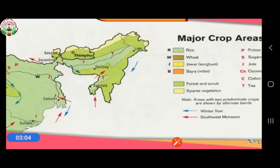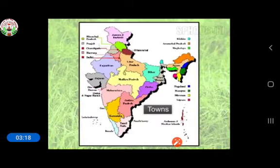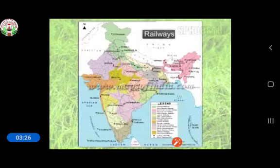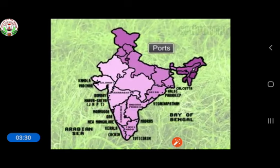Special symbols are also used to show distributions of crops, minerals, industries, dams, etc. Some important symbols are shown here to represent towns, railways, roads, ports, etc.